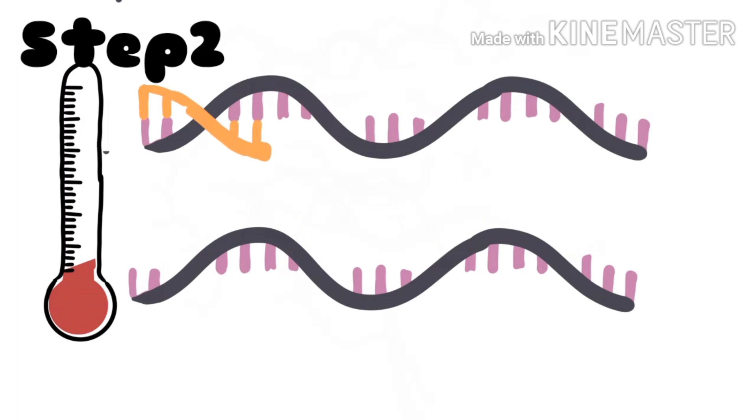In the second step of the PCR, the temperature is lowered so the primers can easily attach to the complementary DNA strand.